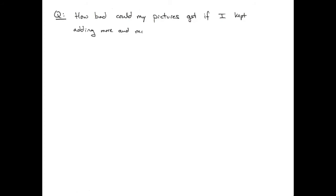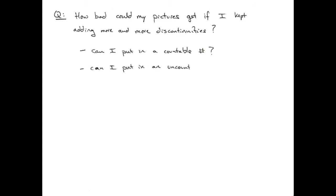This raises a question: if we think of monotonic functions as step functions, how bad could the picture get if we kept adding more and more discontinuities? Can we put in a countably infinite number? Can we even put in an uncountably infinite number? The answer is we can't do anything we want — the best we can do is put in a countable number of discontinuities, which is answered by Theorem 6.2.